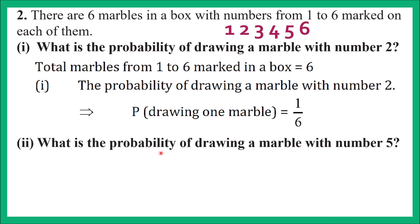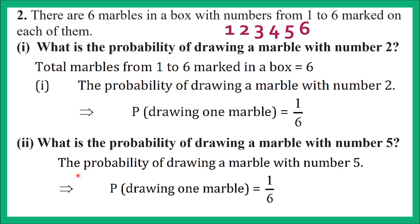Part 2: what is the probability of drawing a marble with number 5? Here, there is only one favorable outcome — marble number 5 — and total possible outcomes are 6. So the probability of drawing marble number 5 is also 1/6. Solution: favorable outcome = 1, total possible outcomes = 6, therefore probability = 1/6.